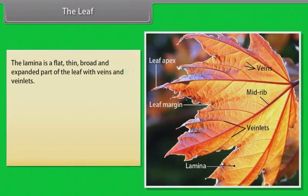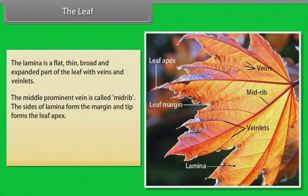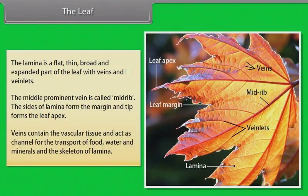The lamina is a flat, thin, broad and expanded part of the leaf with veins and veinlets. The middle prominent vein is called mid-rib. The sides of lamina form the margin and tip forms the leaf apex. Veins contain the vascular tissue and act as channel for the transport of food, water and minerals, and the skeletal of lamina.